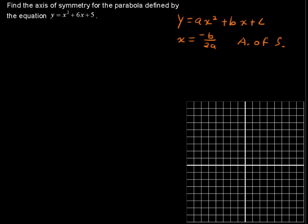Let's pick off these numbers. We've got our a value in our equation is 1, that coefficient of x squared. Our b is equal to 6, and our c value is 5.